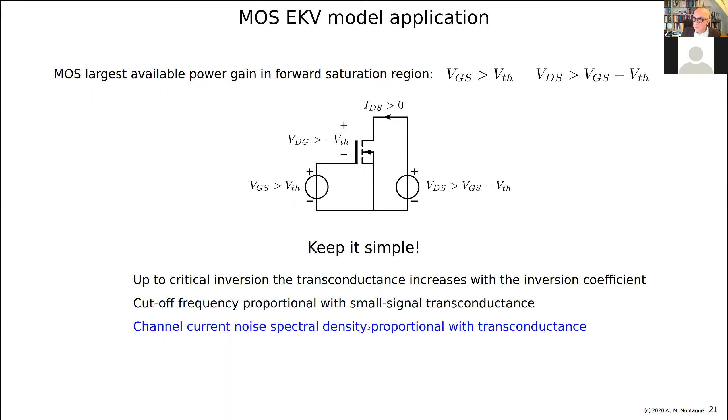And maybe you have to do something else then. The channel current noise spectral density is proportional with the transconductance. I think you should know this. And the corner frequency of the 1 over F noise is proportional with the cutoff frequency. So if you have a high cutoff frequency, unfortunately, you also have a high corner frequency of the 1 over F noise. This will be discussed later in one or two lectures.